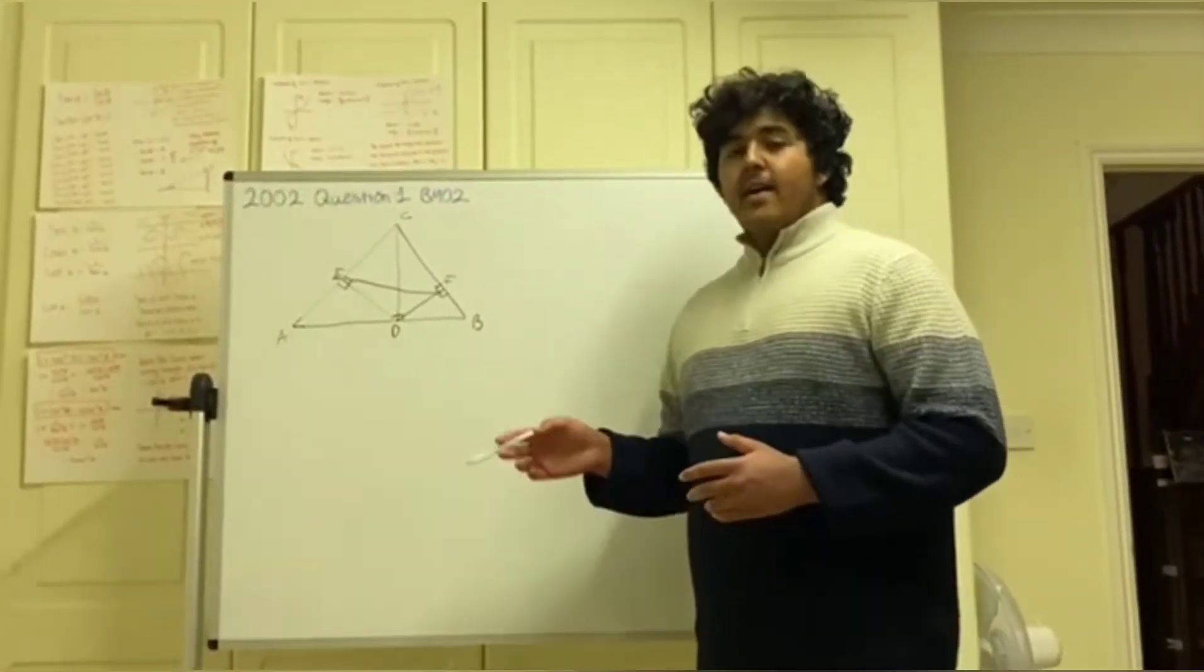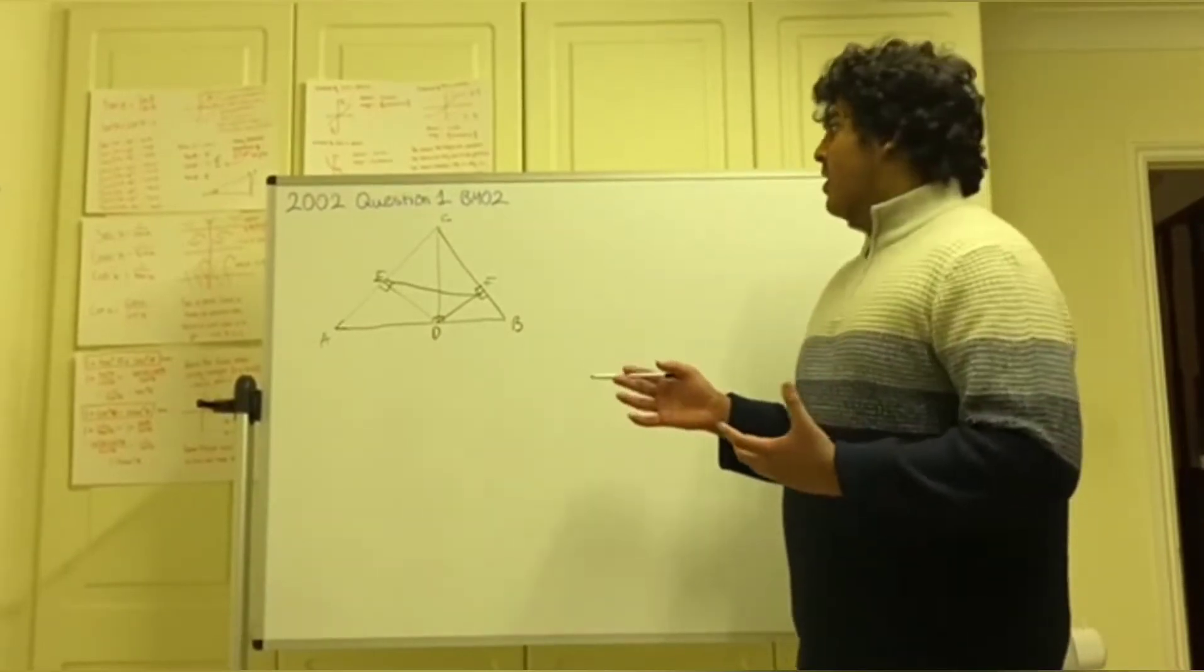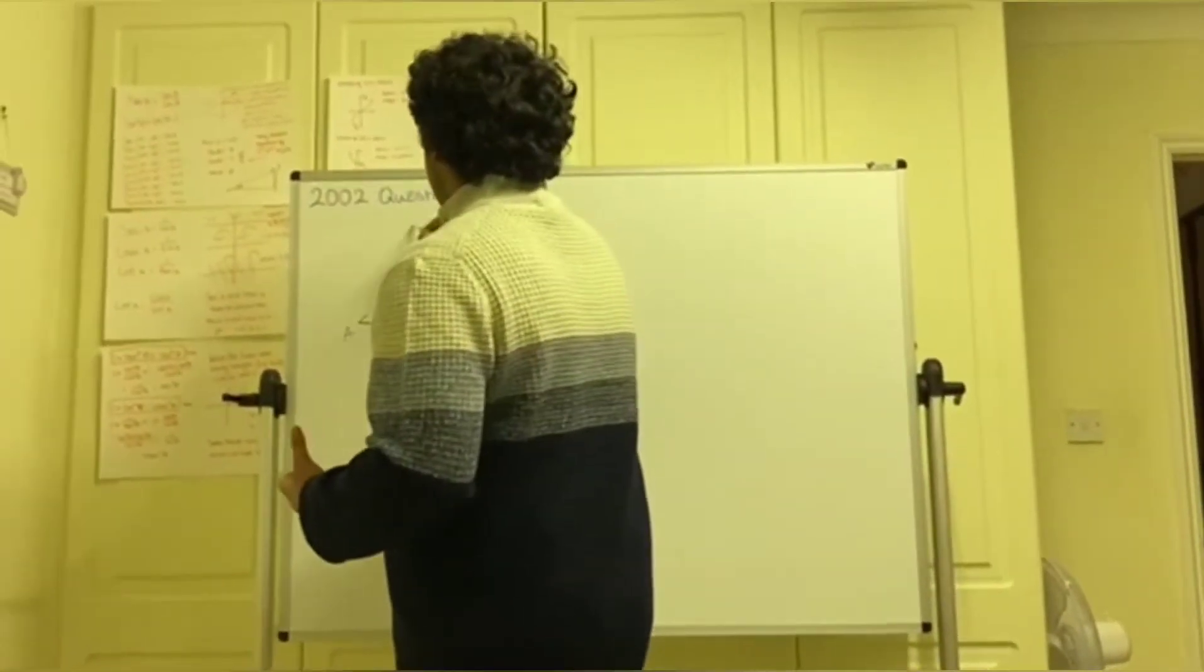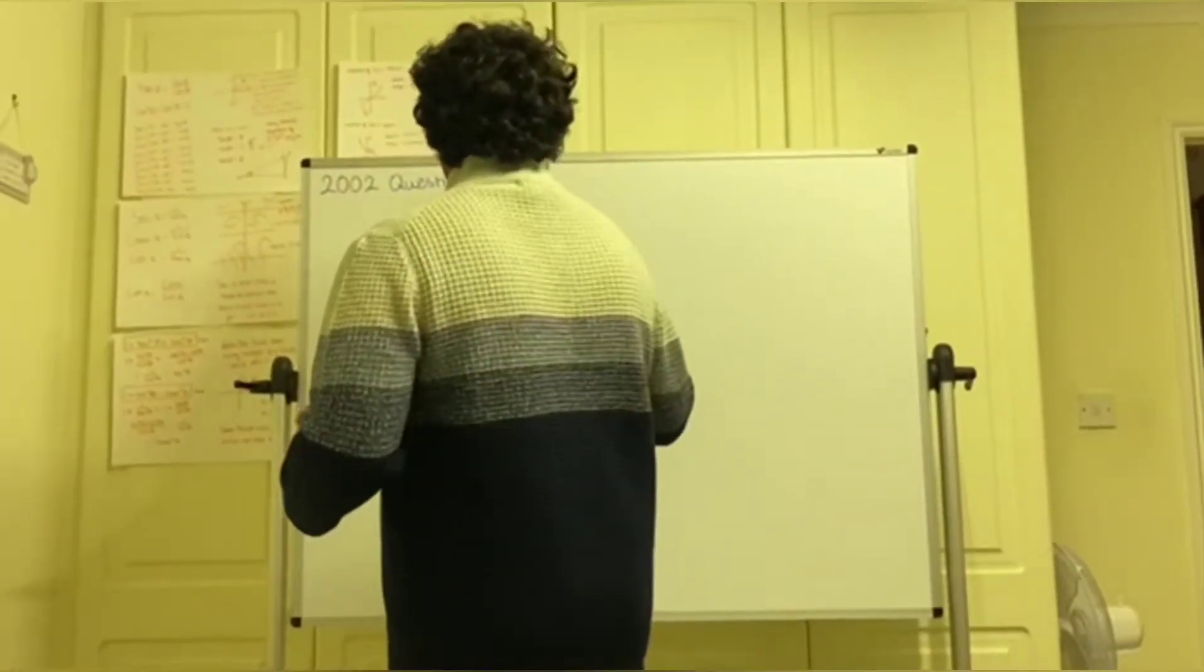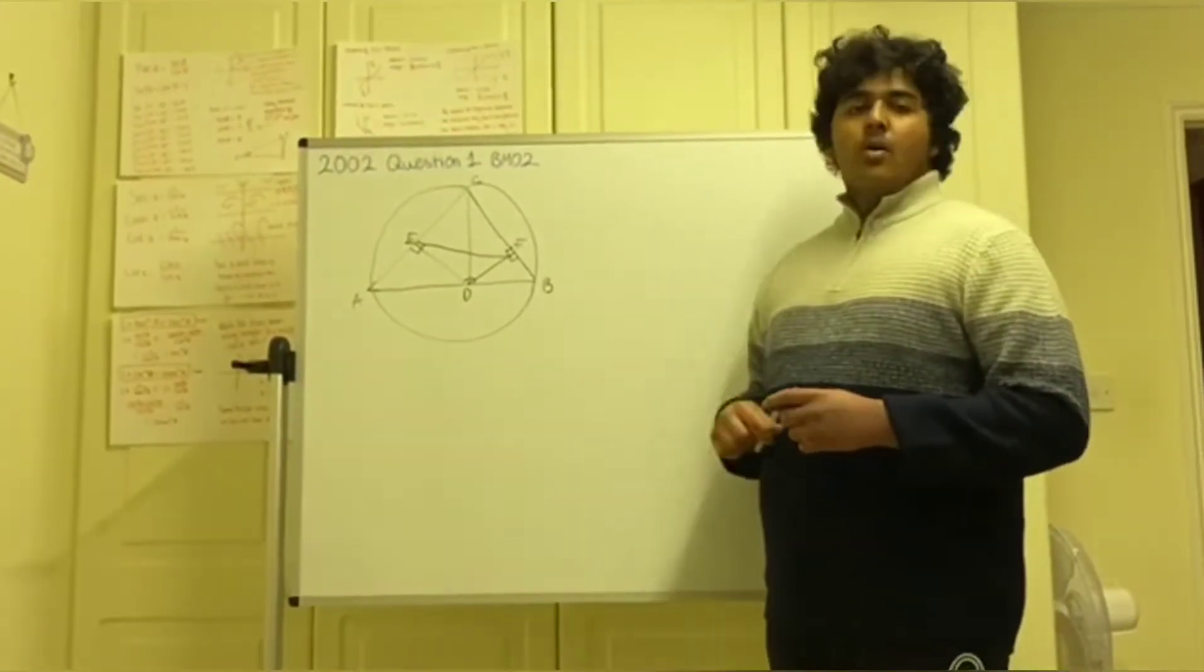As John Smith once said, with any geometry question, the wise thing would be to draw a circumcircle first. That's what we're going to do. We're going to draw a circumcircle which is essentially a circle which the points A, B and C all lie on.